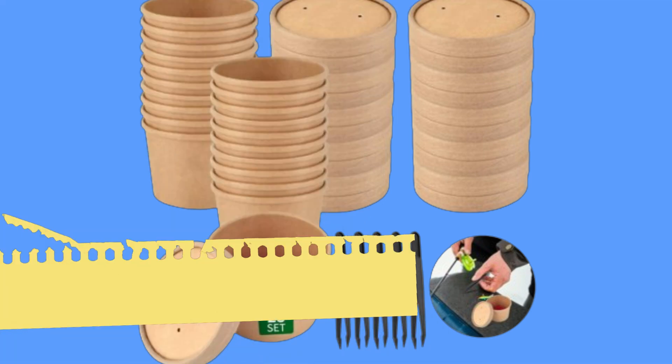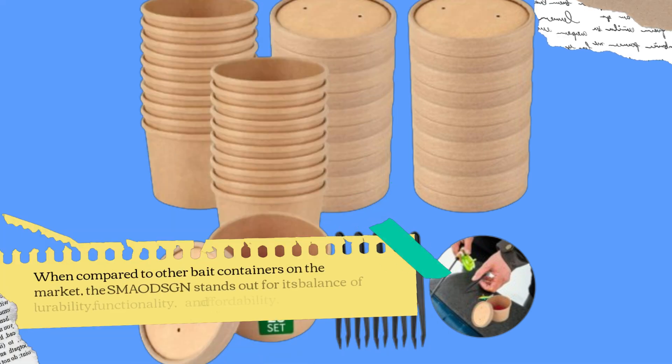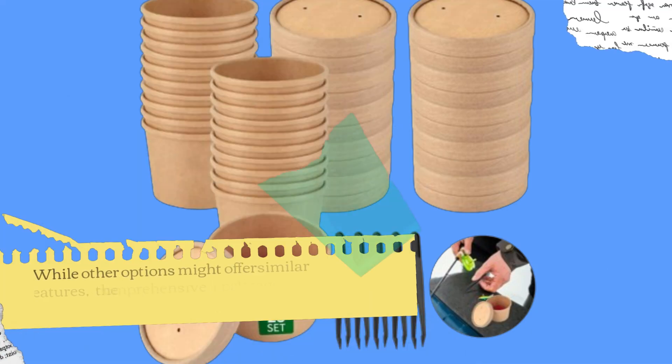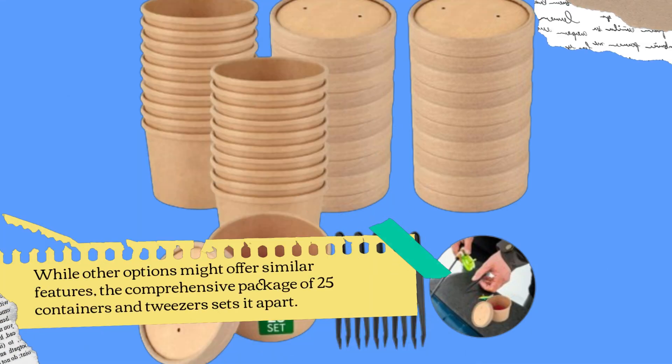When compared to other bait containers on the market, the SMAO DSGN stands out for its balance of durability, functionality, and affordability. While other options might offer similar features, the comprehensive package of 25 containers and tweezers sets it apart.